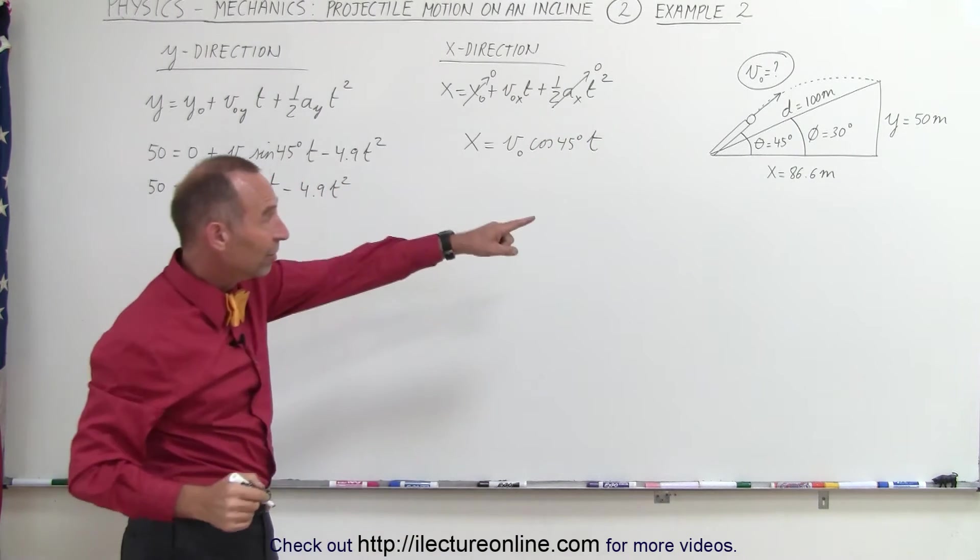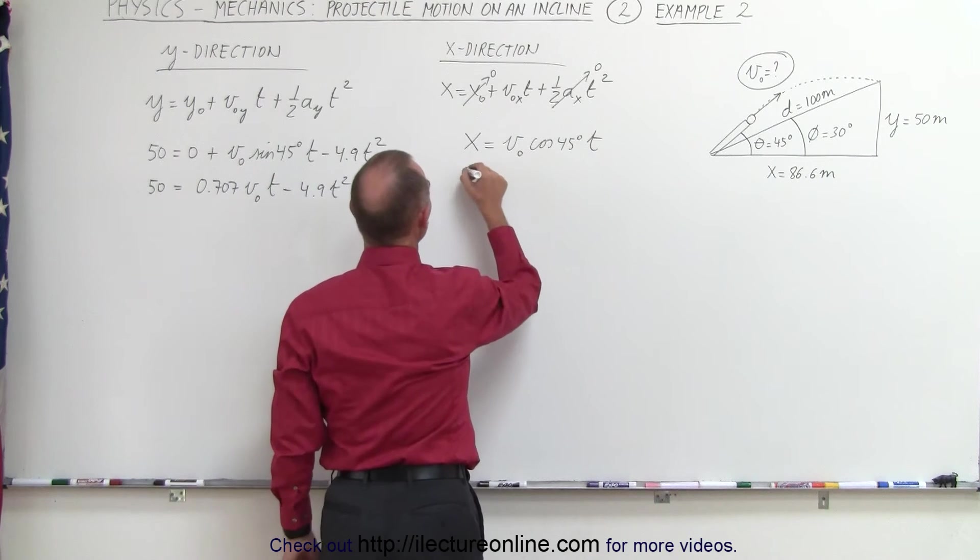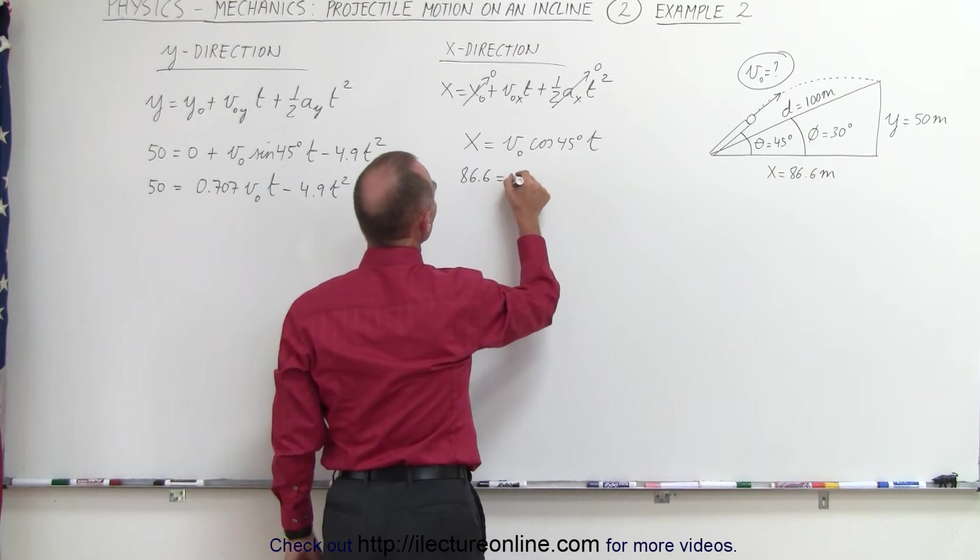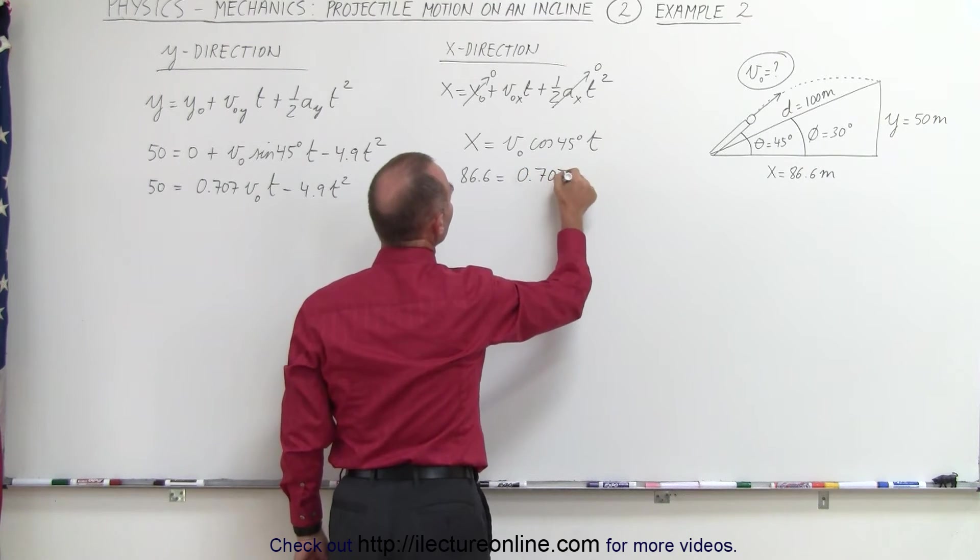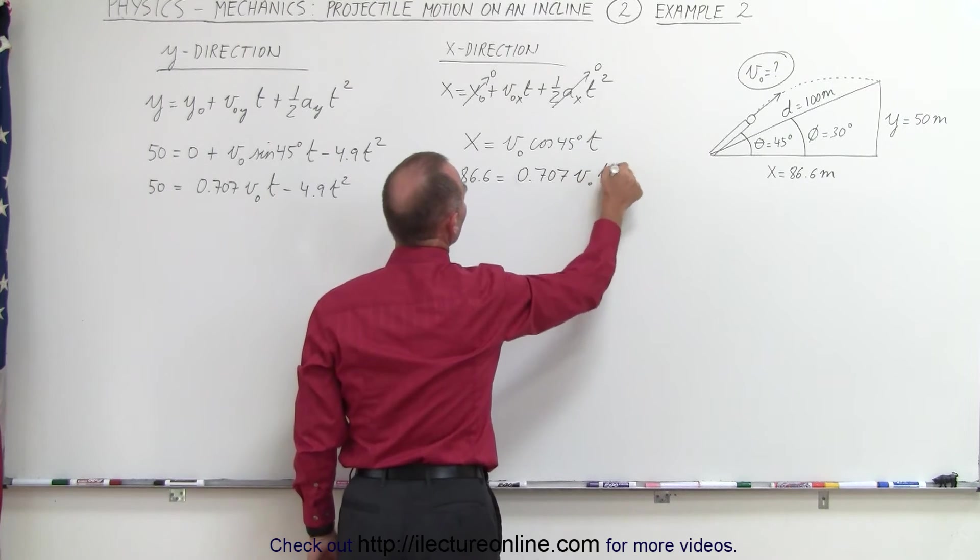We know what x is when it reaches the incline: 86.6 equals the cosine of 45 degrees, which is 0.707, times v initial times time.